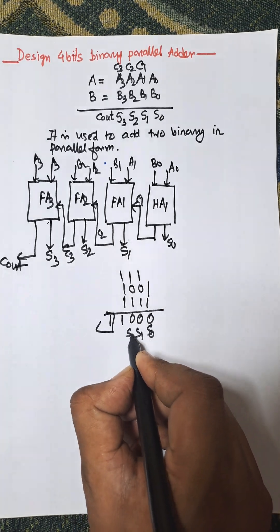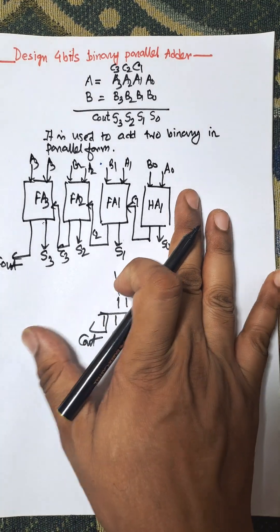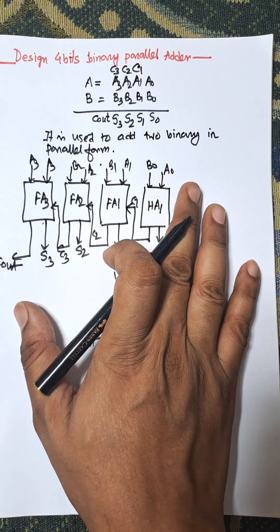This is S0, S1, S2, S3, and this is Cout. So this is the circuit diagram for 4-bit binary parallel adder.